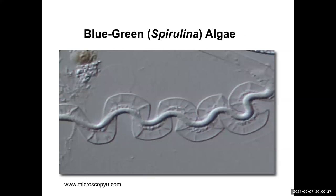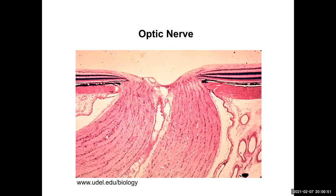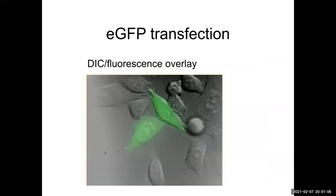How about this? Oh, it's the same worm as before. Hint: it's not stained. Hint: it's not phase. Yes, it is DIC — the other contrast-generating technique. There's a lovely optic nerve, and yes, it's bright field — that characteristic H&E stain that histotechs are so well known for.